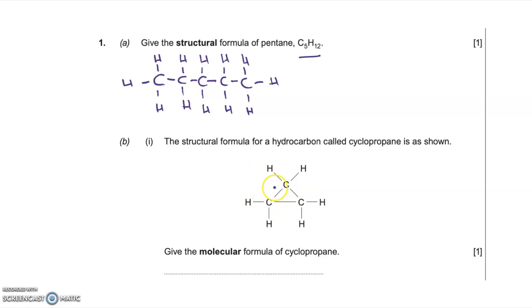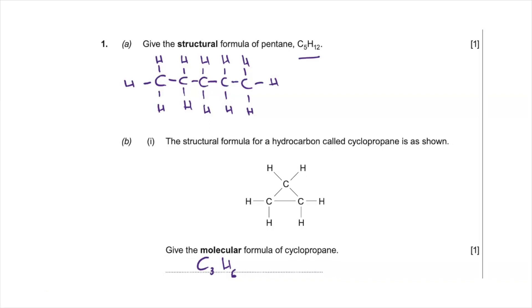For part B, the structural formula for a hydrocarbon called cyclopropane is shown. This is unusual because it's not a compound you come across at GCSE, but this is designed for you to work out the molecular formula. You can see there are three carbons and six hydrogens, so the molecular formula is C3H6. Remember, when dealing with hydrocarbons the molecular formula is simply how many carbons and how many hydrogens are present — C3H6 gets you one mark.